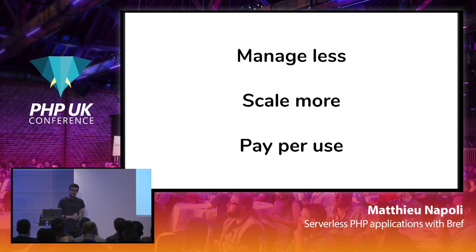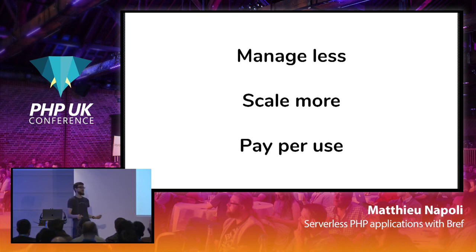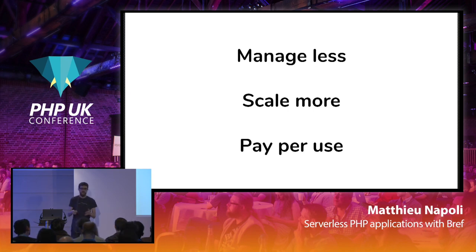You can scale more easily because Amazon, Microsoft, and Google are really good at scaling — and at least I'm not. And usually you pay for what you use. Instead of over-provisioning stuff, you pay exactly for what you need, and you can save some money sometimes.